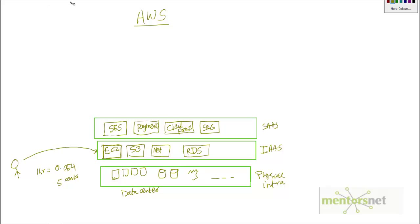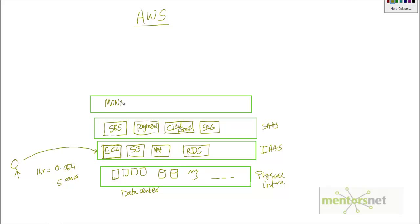On top of this, Amazon Web Services also gives you monitoring services for your EC2 instances, Amazon authentication services so you can authenticate your users, and Amazon CloudFormation to deploy and build your infrastructure. Essentially AWS gives you all these added services plus the physical infrastructure to make your enterprise deployment easier.